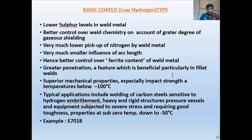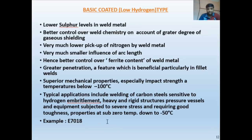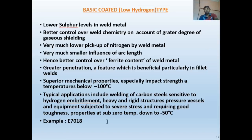Basic coated electrodes have superior mechanical properties, especially at low temperatures below 0°C; they can be used down to -100°C. Typical applications include welding carbon steel sensitive to hydrogen embrittlement, pressure vessels, heat exchangers, and heavy structures. If hydrogen-induced cracking is a concern, the E7018 electrode is used because it prevents hydrogen embrittlement.